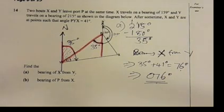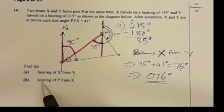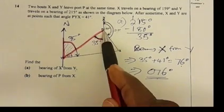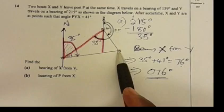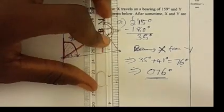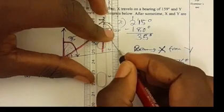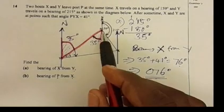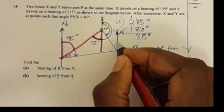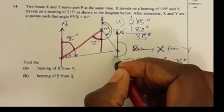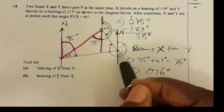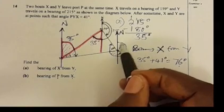Next, they want us to find the bearing of P from X — that is, find the bearing of P whilst standing at X. At point X we draw a north line. Bearing is measured from the north clockwise until we reach the line connecting P and X.